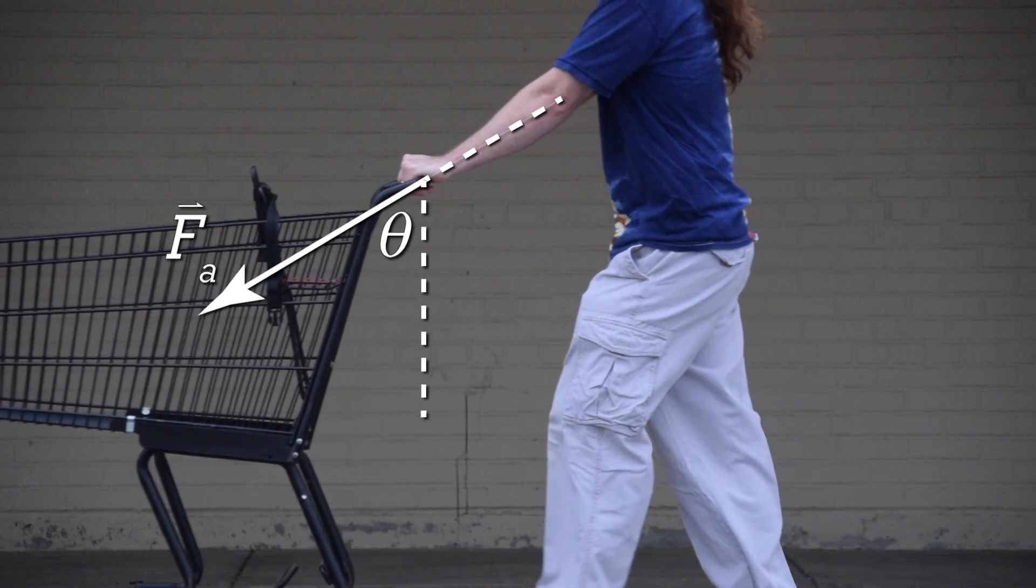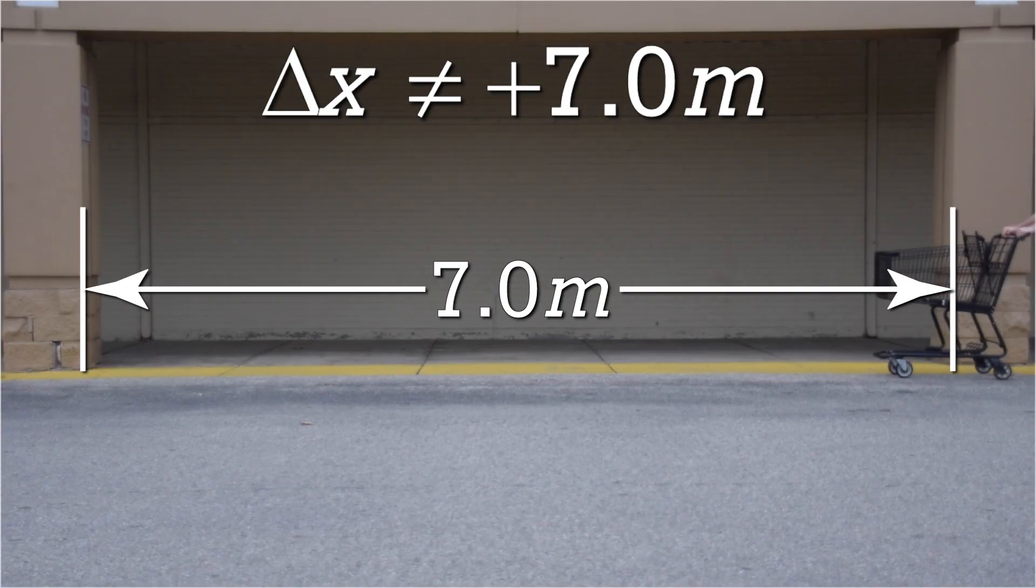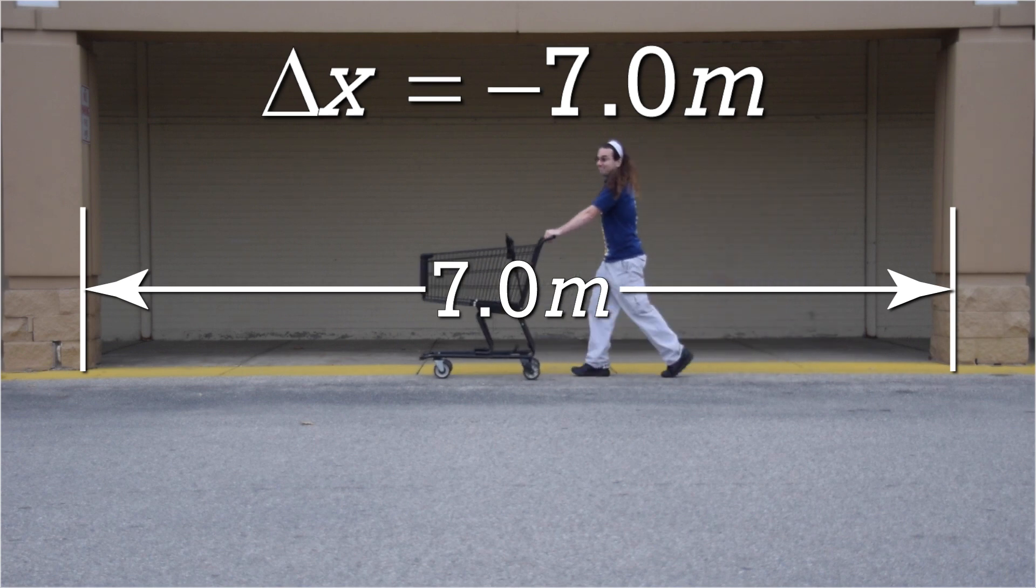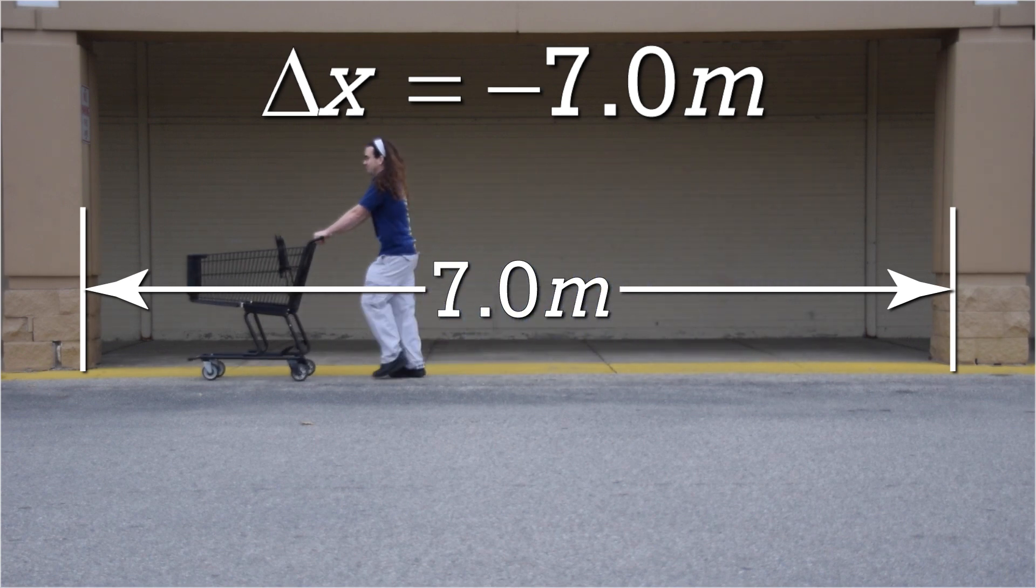Mr. P: Bobby, does that help? Bobby P: Yes, thank you. Mr. P: But doesn't that mean the cart is moving to the left, so the displacement of the cart should be negative 7 meters? Mr. P: That is correct, Bobby.